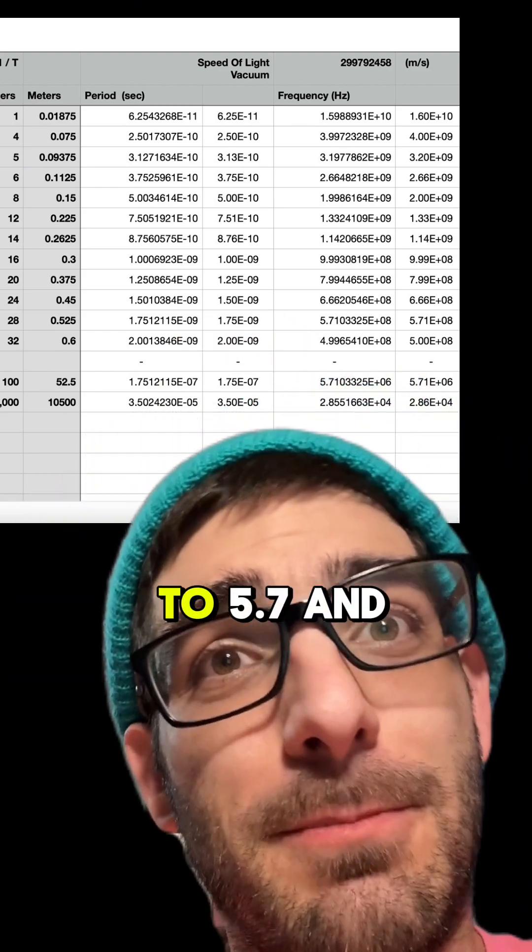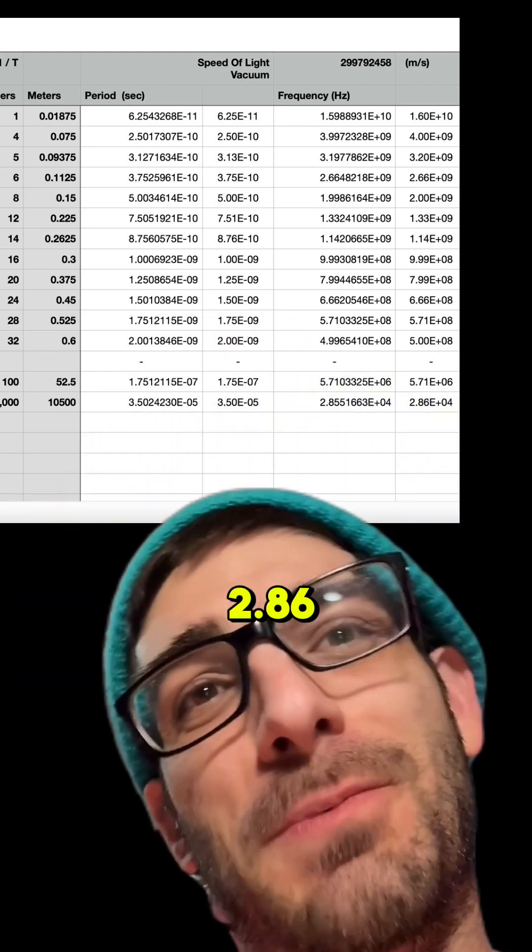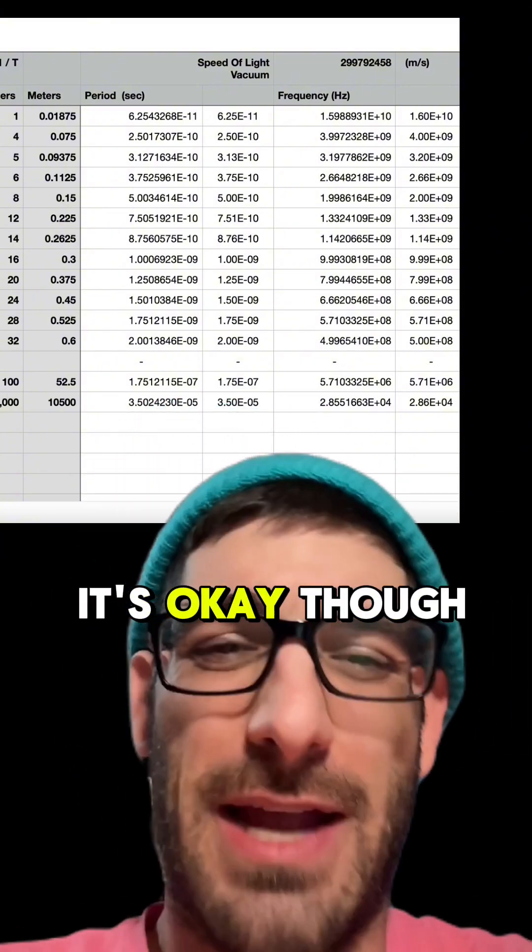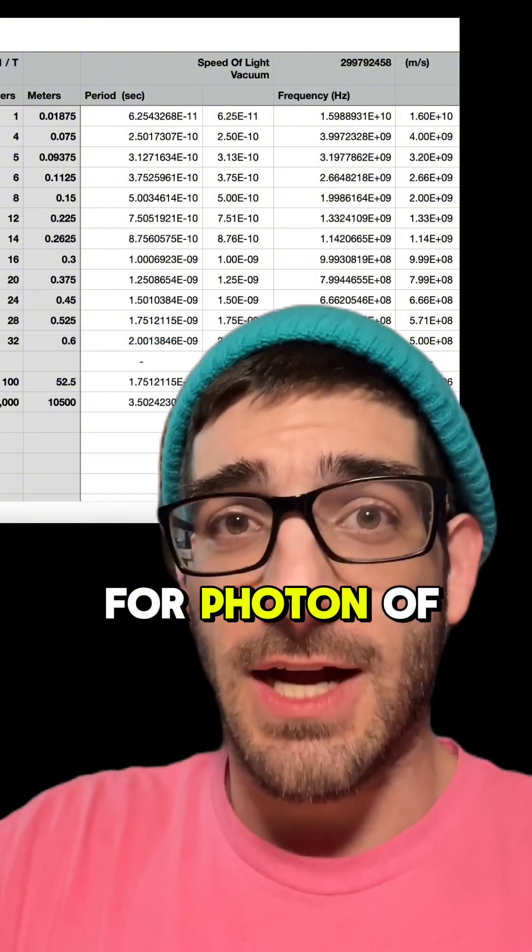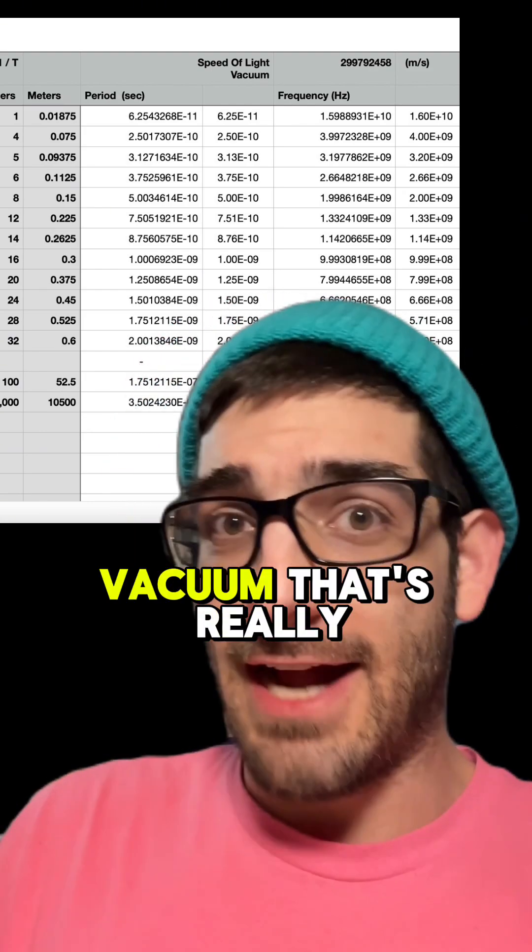The bigger ones come out to 5.7 and 2.86. It's okay, though, but this is just the speed of light in a vacuum. So this is what it'll be for a photon of these lengths, the frequency and period in a vacuum. That's really, come on, that's not a coincidence.